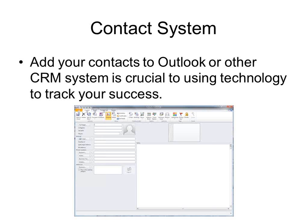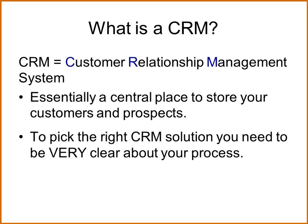For example, one of the contact systems a lot of people use is Outlook, but you might use something more advanced like a CRM system — that stands for Customer Relationship Management System. A CRM is a central place where your data is stored and can often be shared with other salespeople. It will do more than just store contact information — it will help you manage your process. At that point you can merge that information and send out your follow-up, rather than sending one email at a time.